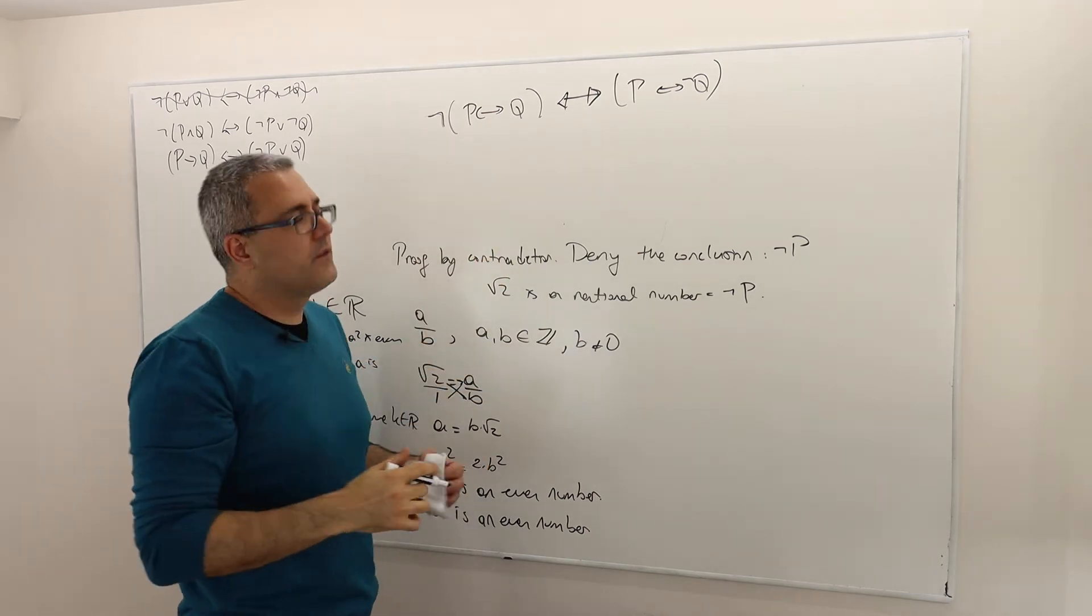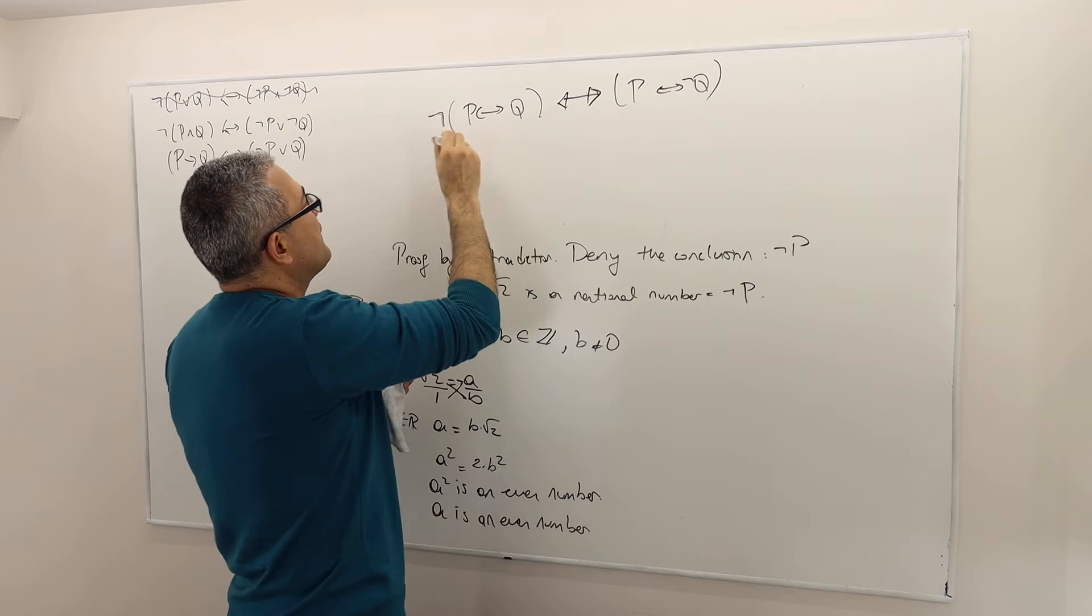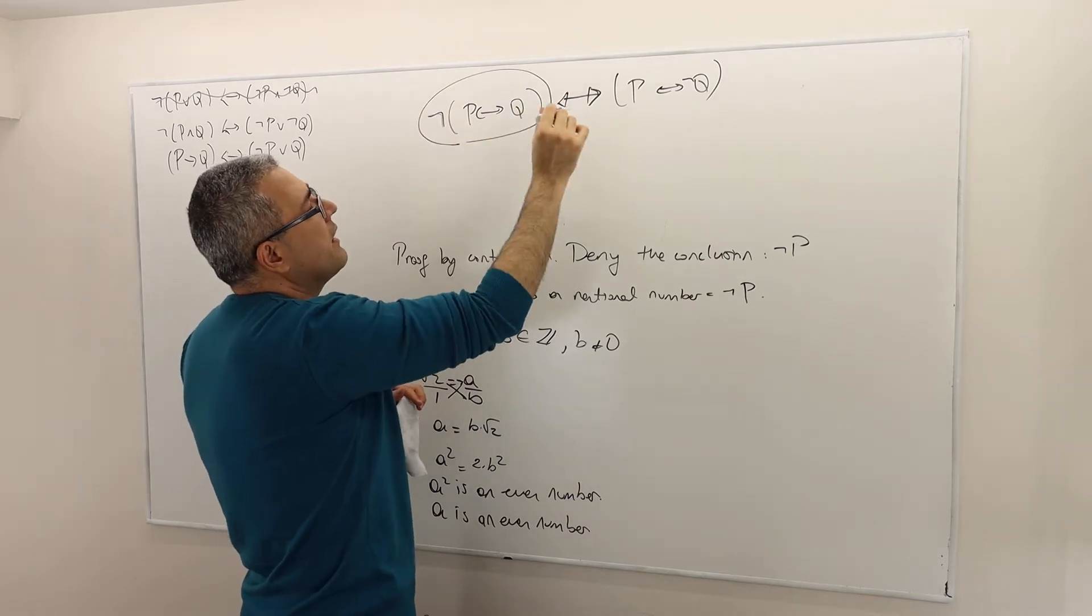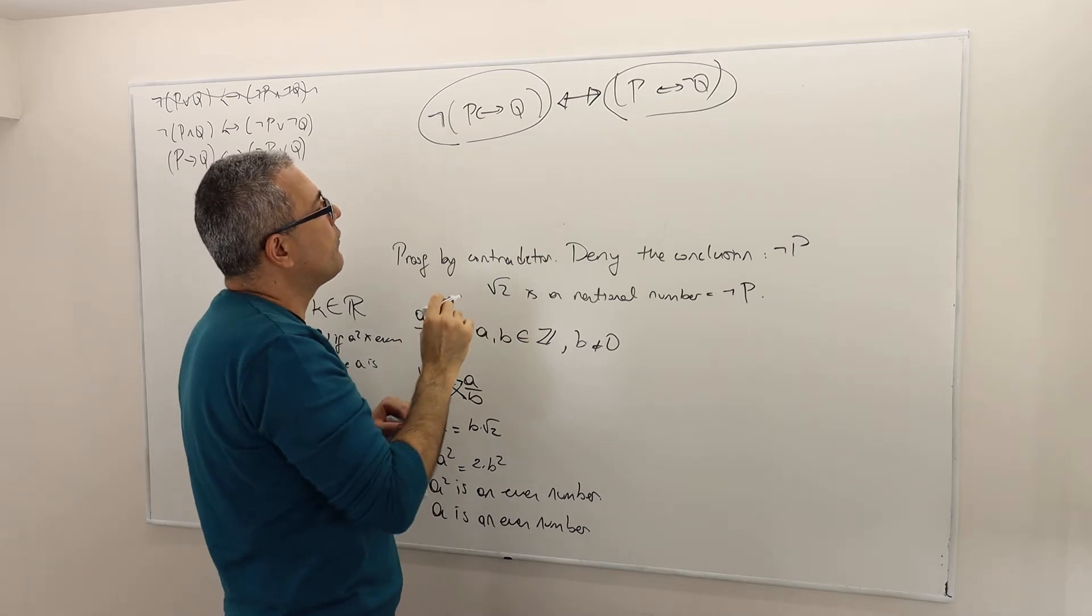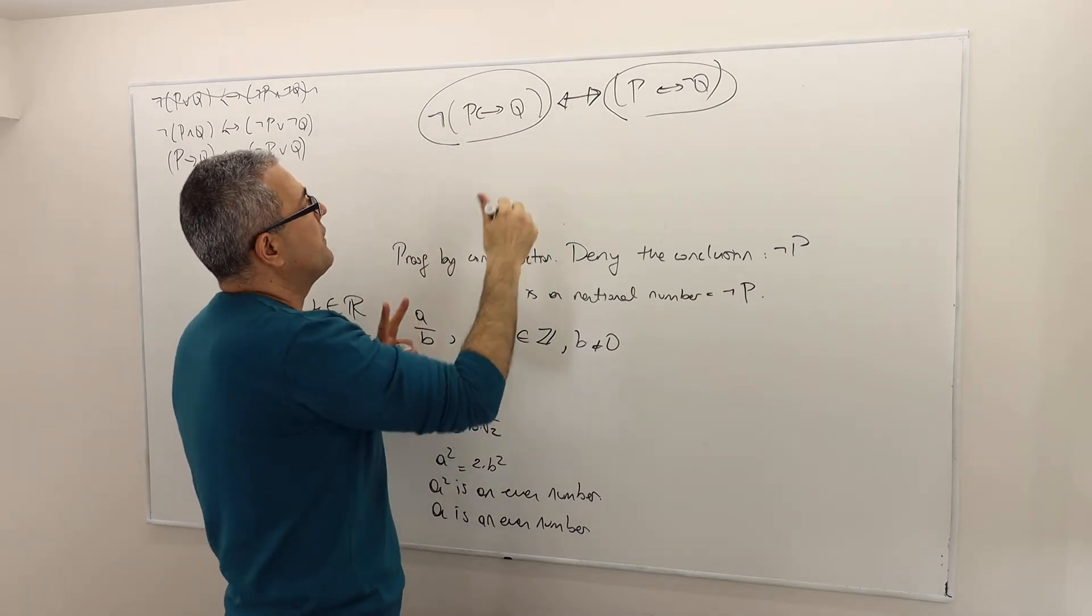But the thing is, the main statement is this guy, this statement, if equivalent to this statement, all right? So therefore, there are two parts of this proof.